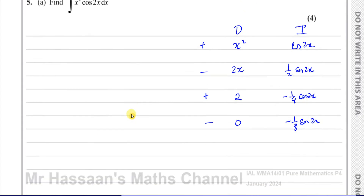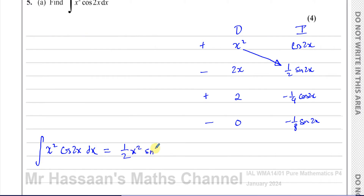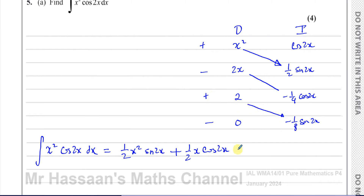The integral of x squared times cosine 2x with respect to x is given by multiplying diagonally along the table. That gives a half x squared sine 2x, then minus times minus gives plus a half x cosine 2x, then plus times minus gives minus 1 over 4 sine 2x, plus c. That is the answer.